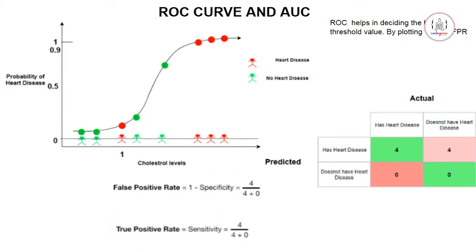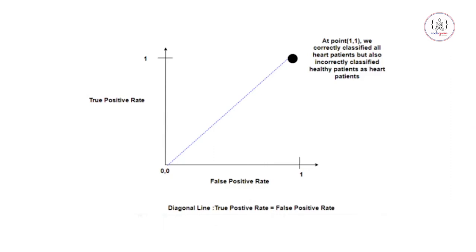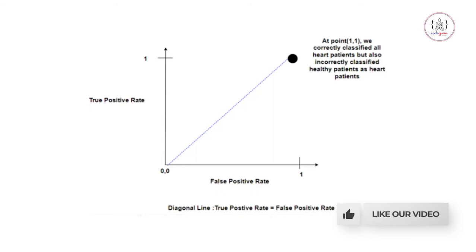We plot this on a graph where the x-axis is the false positive rate and the y-axis is the true positive rate. At threshold 0, where all patients are predicted positive, this point is plotted. If you connect this point to the origin, you divide the graph into two halves — meaning the model has equal true positive and false positive rates, so it is just doing random guessing.